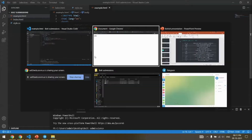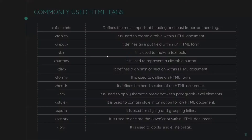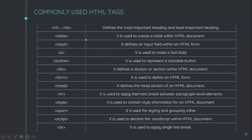The table tag is used to create a table within an HTML document. The input tag is used to define an input field — for example, the email and password boxes on a login page for Facebook or Instagram are input fields created using the input tag. The b tag makes text bold, and the button tag is used to create buttons like submit or login buttons.